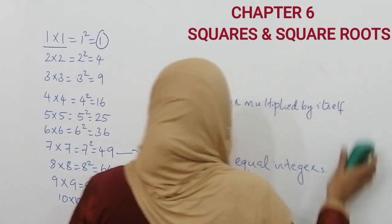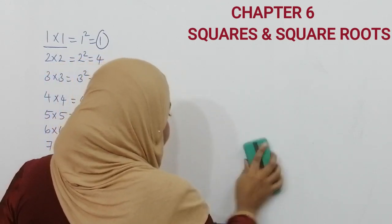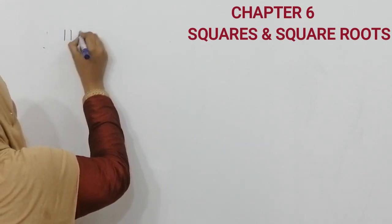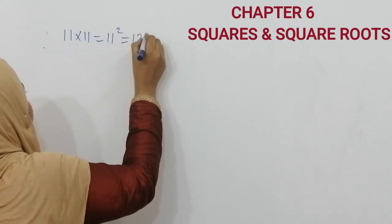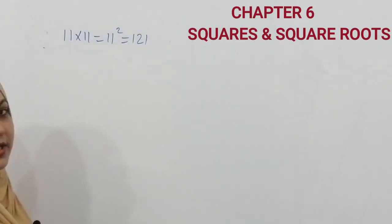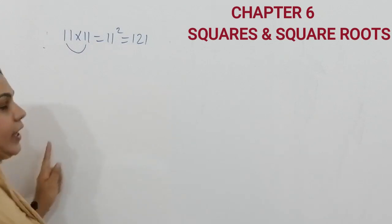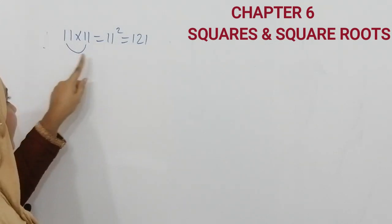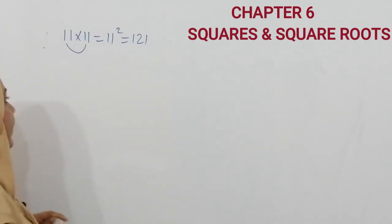If you understand this properly, you can do the square table of 11 to 20. So let's start with the square table of 11 to 20. You know that 11 into 11, that is 11 squared, that is 121. So how are you getting 121? You know that 121 is the product of two equal integers, which are 11 and 11. So 11 multiplied by 11 gives 121.